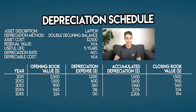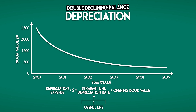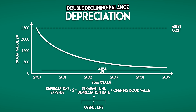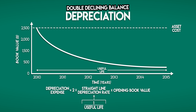Note that the depreciation expense changes each time. Let's see this plotted on the graph. This is your laptop's book value over time. Your asset cost at the beginning is $2,500 and it has a useful life of five years. The depreciation expense is variable because it changes each year, and it's accelerated because it's higher in early years. But the double declining balance method isn't the only accelerated depreciation method.